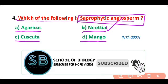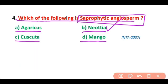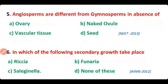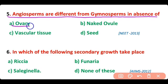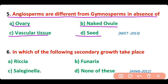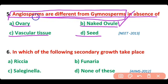Question 5. Angiosperms are different from gymnosperms in: absence of ovary, absence of naked ovule, absence of vascular tissue, or absence of seeds? The correct answer is option B. Angiosperms are different from gymnosperms because the ovule of angiosperms is not naked; rather, it is covered by an ovary.